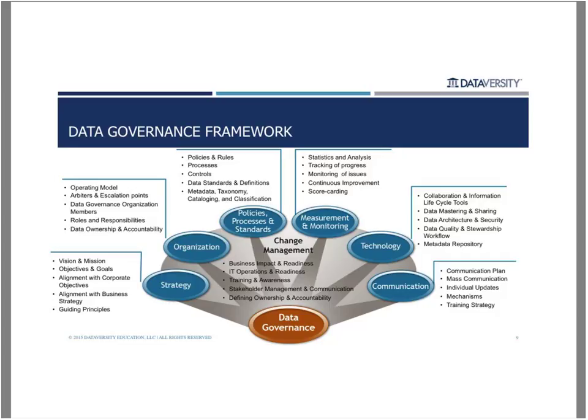After creating the strategy and establishing your goals, you need to identify who will be accountable for executing the data governance program and establishing data governance as a discipline within your organization. That organization structure then creates the accountability to execute on policies, processes, and standards, as well as to measure and monitor the progress of the program and to implement technology to support the identified strategy.